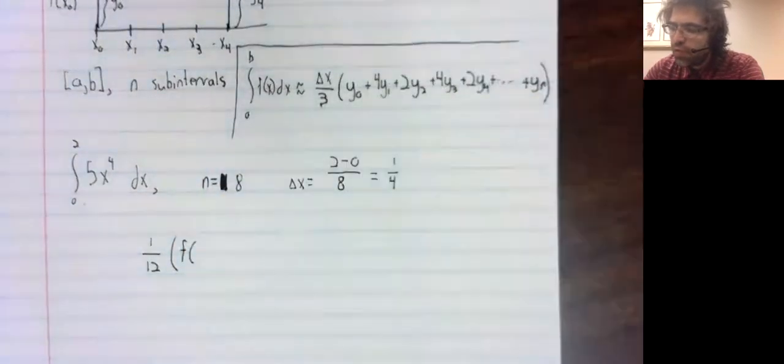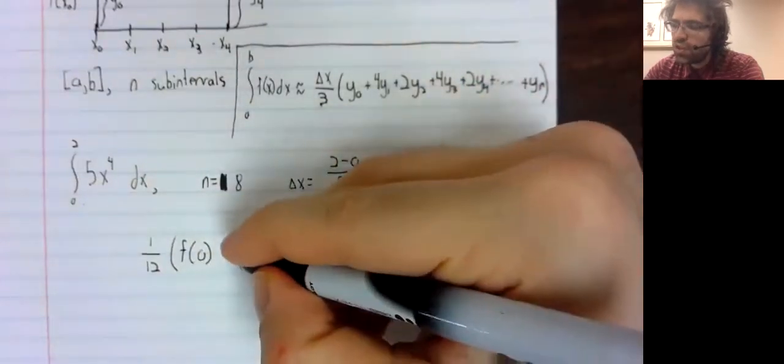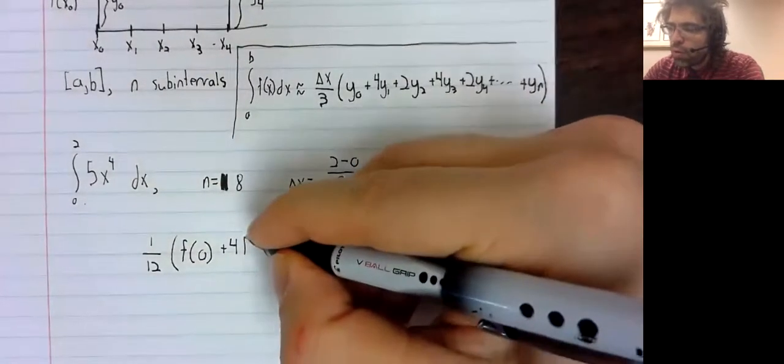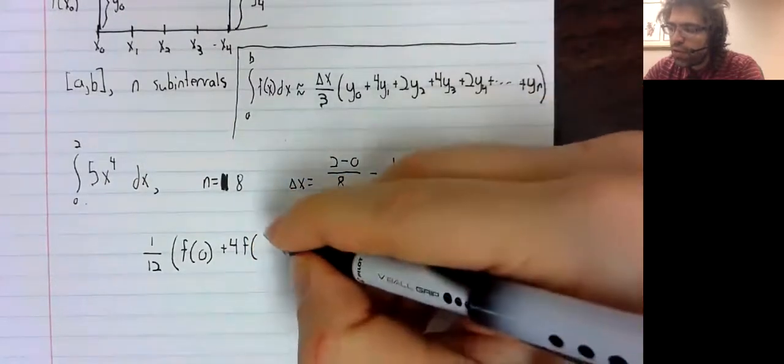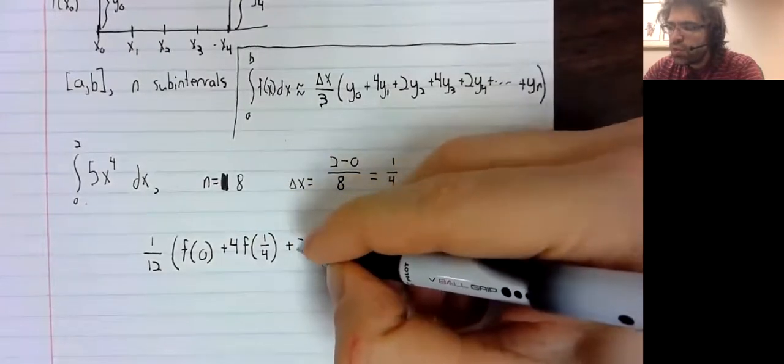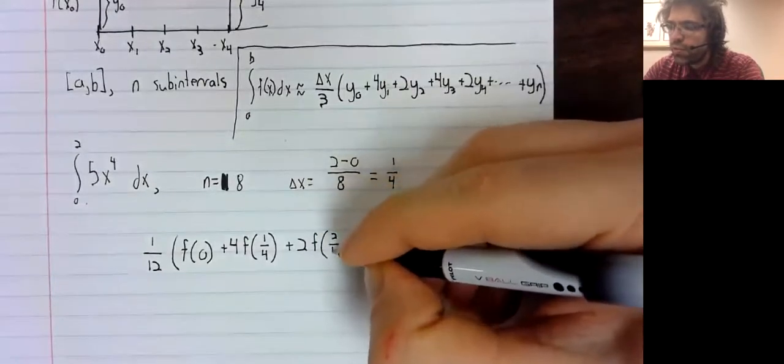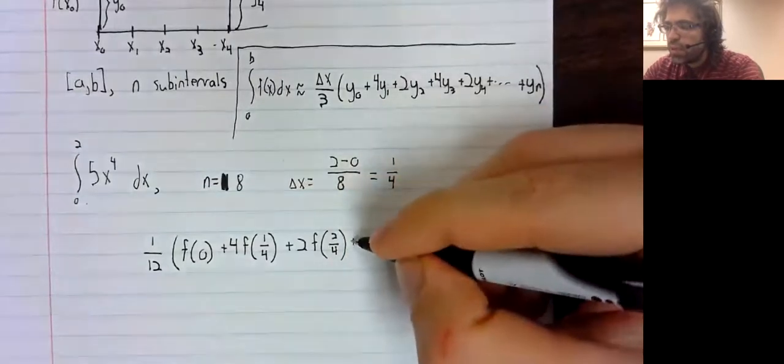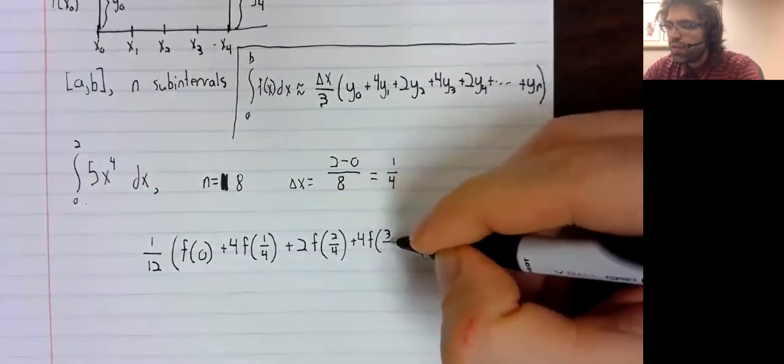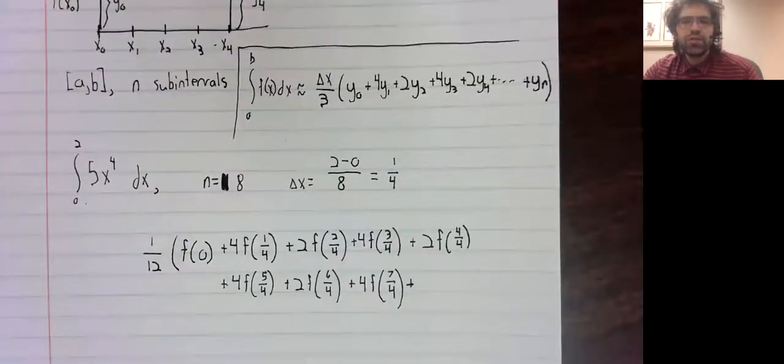Then f of zero, and now we'll alternate between four and two. Four times f of one-fourth plus two times f of two-fourths plus four times f of three-fourths and so on.